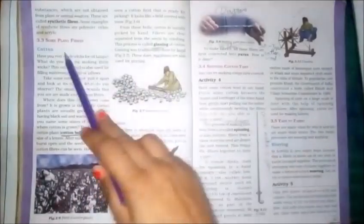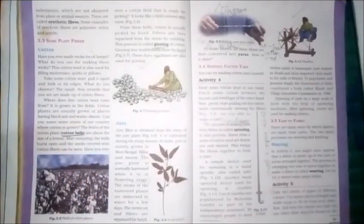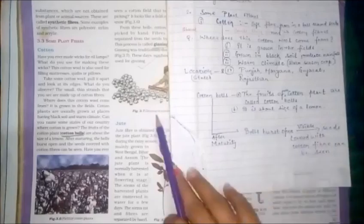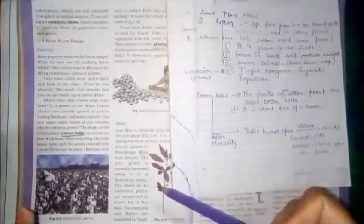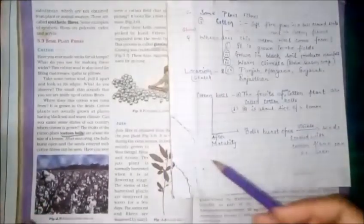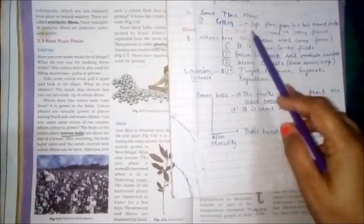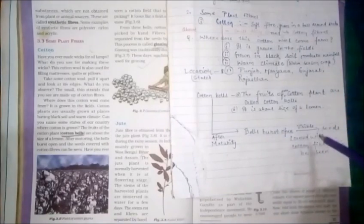Today we will start our new topic, some plant fibers, under which we will first discuss about cotton. You have seen mattresses and quilts at your home filled with cotton or wool. Cotton, the soft fiber, grows in a ball around the seeds. These are also called warm season crops as they are grown in warm climate.